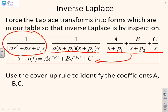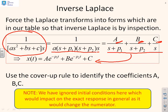Now, how are we going to identify these unknown coefficients A, B, and C? I'm going to suggest here that we use the cover-up rule to identify those coefficients. You can use other techniques, should you wish to. Again, a reminder, we've ignored initial conditions when we took Laplace of the derivatives. If you wanted to include initial conditions, they would change the numerator somewhat, but that's beyond the scope of this video.